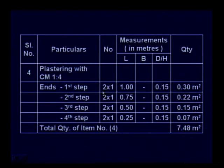There are two numbers for each step because both sides are included. First step: 2 × 1 × 0.15; second step: 2 × 0.75 × 0.15; third step: 2 × 0.5 × 0.15, giving 0.15. Lastly, fourth step: 2 × 0.25 × 0.15 equals 0.07 square meters.